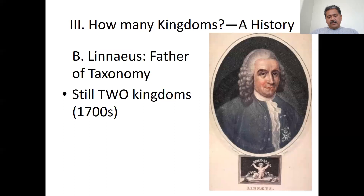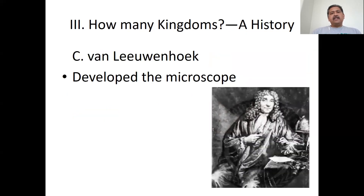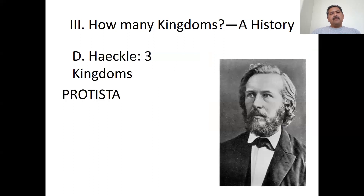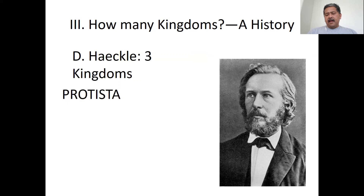That was Aristotle 4,000 years ago. Linnaeus came along in the 1700s and was still saying there are two kingdoms — this lasted a long time. As we've already studied, van Leeuwenhoek developed the microscope. It wasn't until after the microscope that Haeckel came up with three kingdoms: animals, plants, and then really small things he called Protista. Haeckel was a contemporary of Charles Darwin.